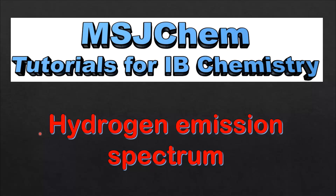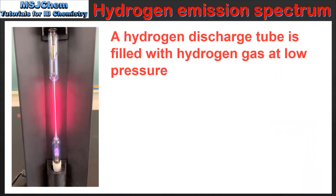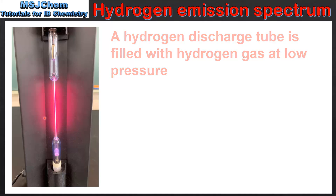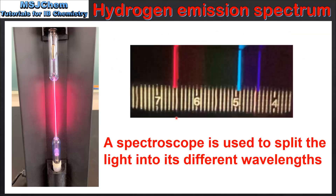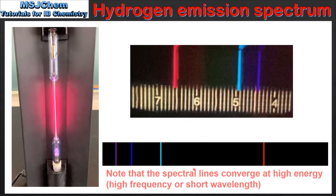This is MSJChem. In this video I'll be looking at the Hydrogen Emission Spectrum. On the left we see the effect of passing a high voltage through a hydrogen discharge tube. When a high voltage is passed through the tube we can see that the hydrogen emits light with a bright pink color. If we then view this pink light through a spectroscope we can see that it's actually made up of other colors or wavelengths of light. This emission spectrum is more commonly shown as seen here, so in this video I'll explain how this emission spectrum is produced.